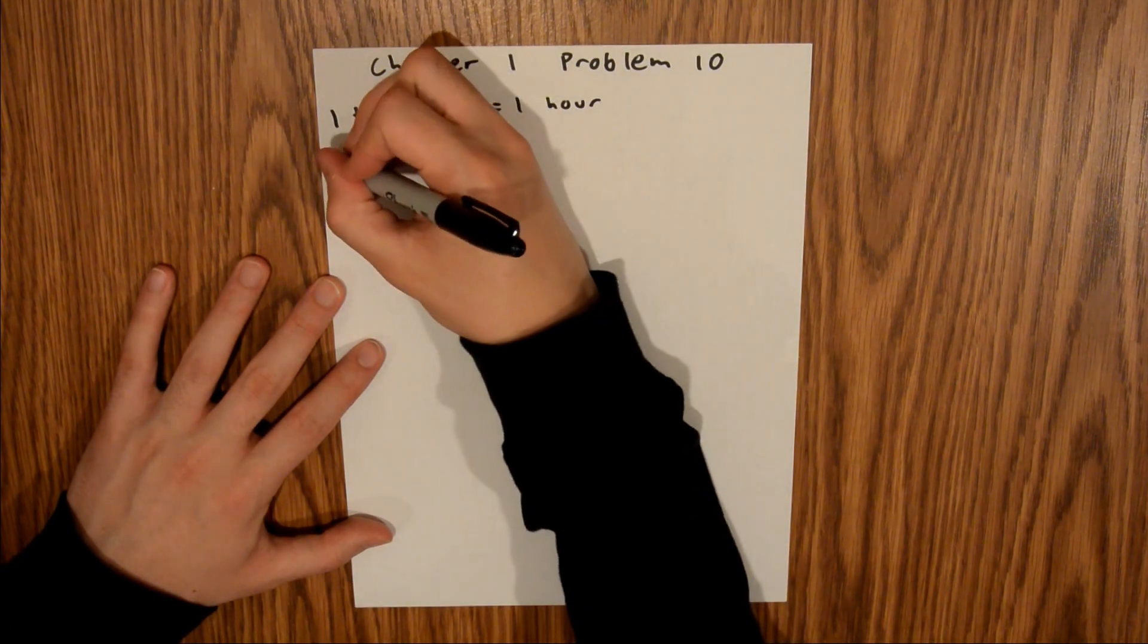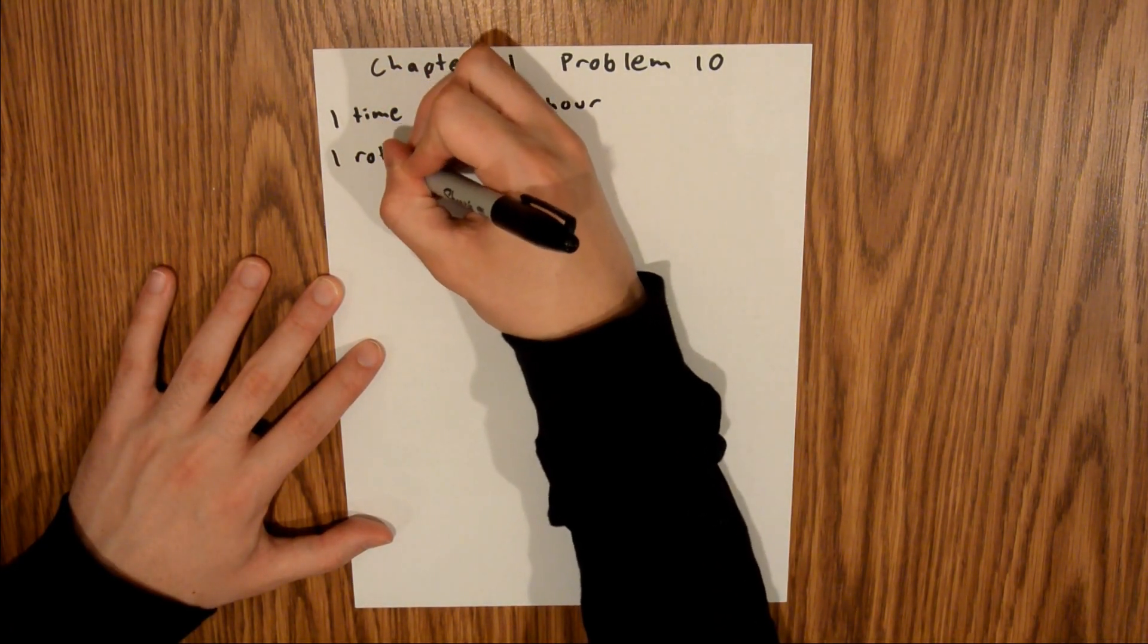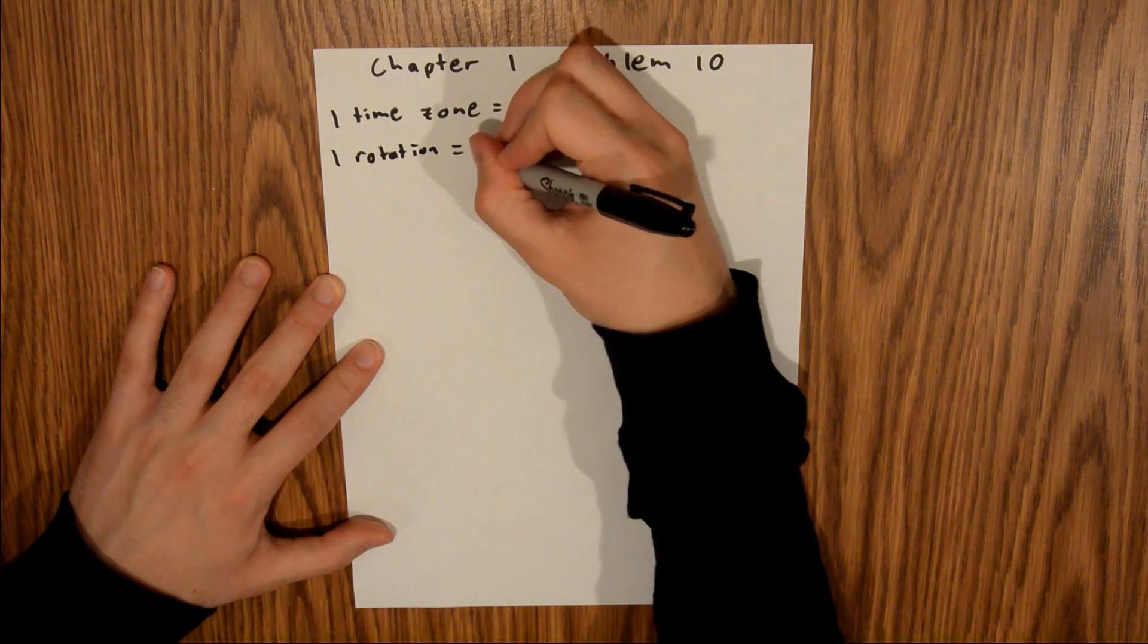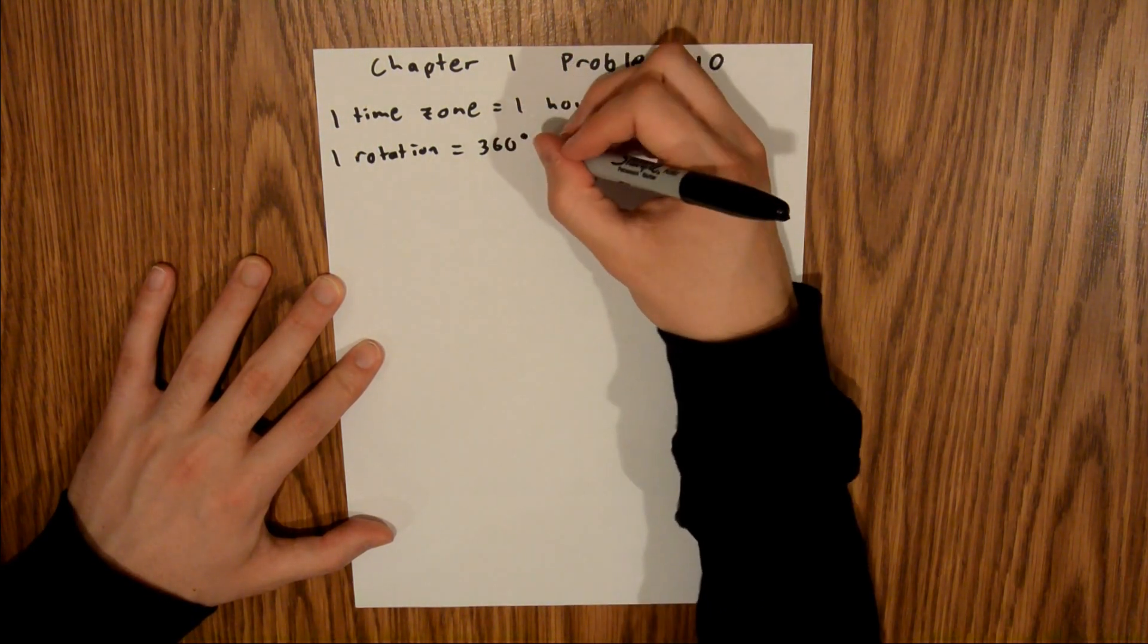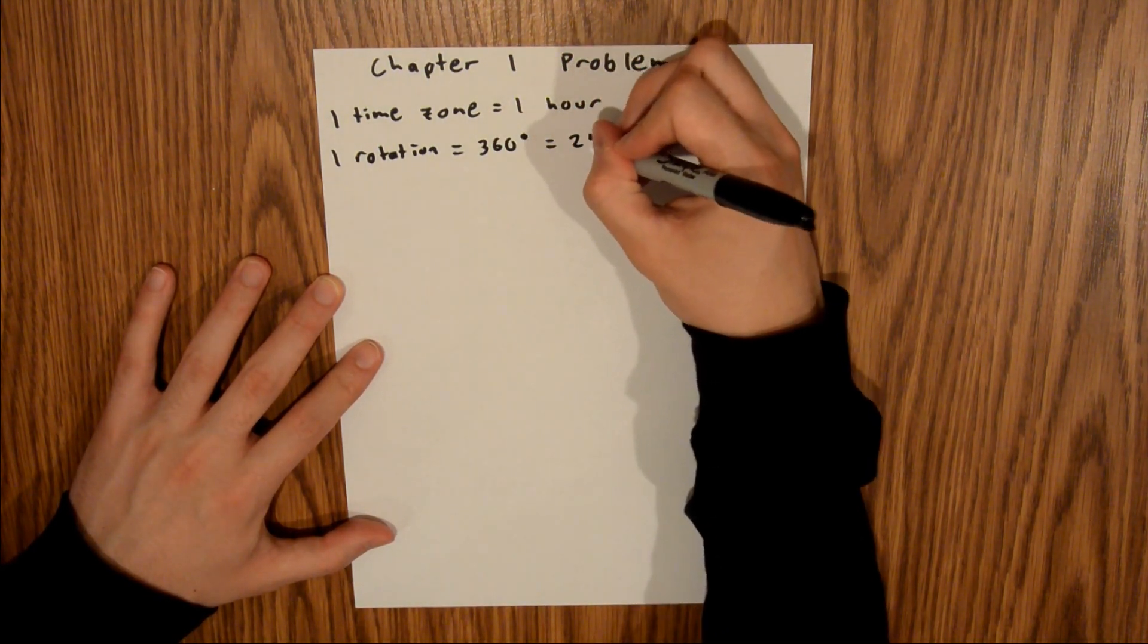and we also know that one rotation of the Earth is equal to 360 degrees, which is equal to 24 hours.